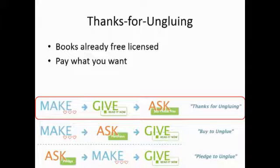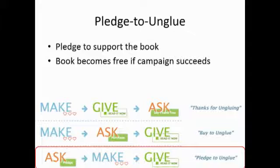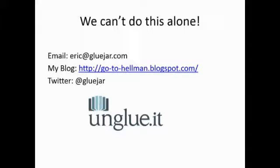We basically have three revenue programs designed to replace the percentage that the conventional book supply chain uses. The Thanks for Ungluing program is for books that are already freely licensed — we have a pay-what-you-want system so people can support the books they like. The Buy to Unglu program is where the creator or publisher sets a revenue goal, and when they hit it, the book becomes free. Finally, the Pledge to Unglu program is a crowdfunding program similar to Kickstarter — the book becomes free if they reach their funding target.